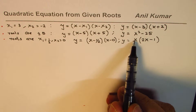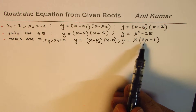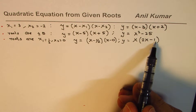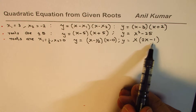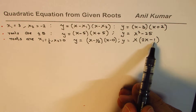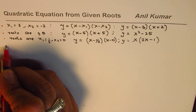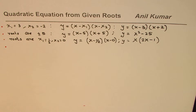When we say y equals x times 2x minus 1, let's verify: do we have a root of one-half? Yes — setting 2x minus 1 equal to 0 gives x equals one-half. So that confirms how you get your equation from fractional roots.